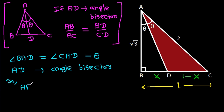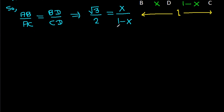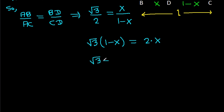So AB over AC equals BD over CD, and AB is √3 over AC is 2, which equals X over (1 - X). Cross-multiplying gives √3 times (1 - X) = 2X, so √3 - √3·X = 2X.